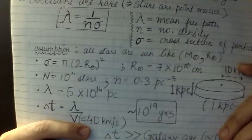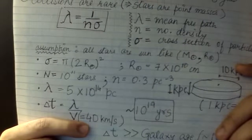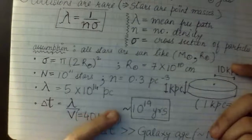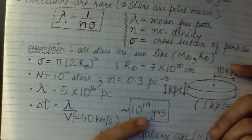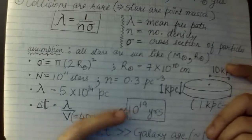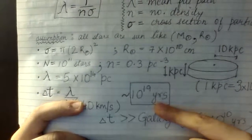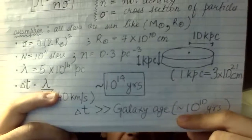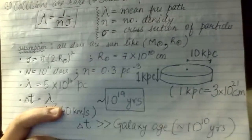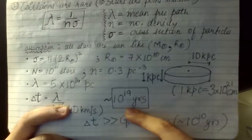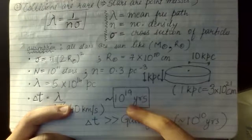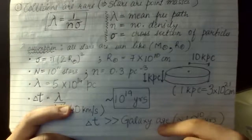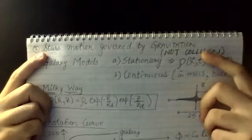The random velocity in our galaxy is about 40 kilometers per second. The resulting average time between collisions of two stars is approximately 10 to the power 19 years. This collision time is much, much greater than the age of the galaxy itself — about 10 billion years — making it 10 to the power 9 times greater than the galaxy's age. So it is not physical for two stars to really collide, and we do not consider collisions.